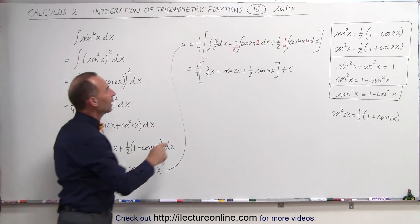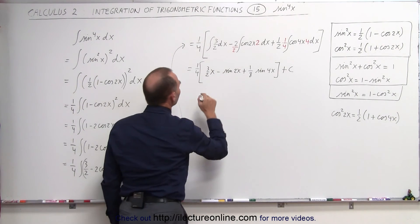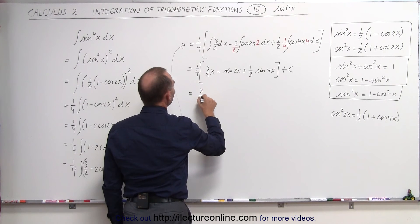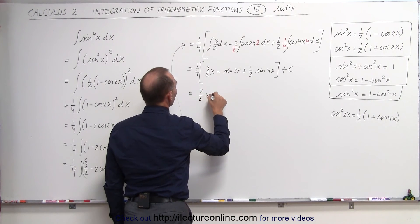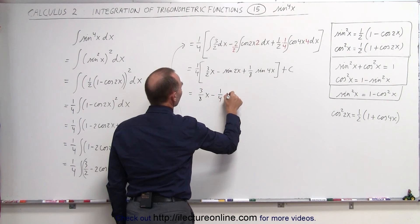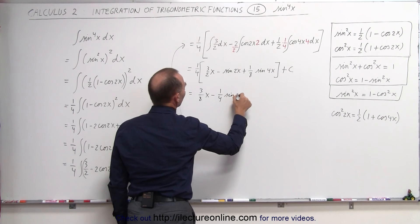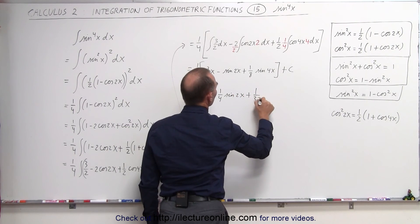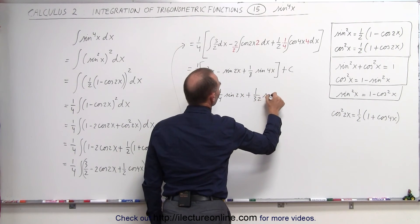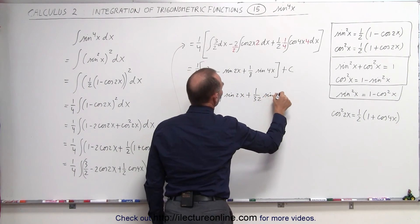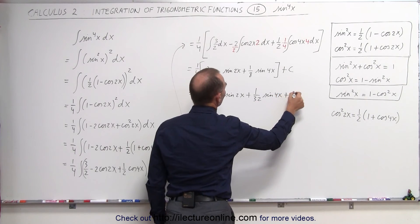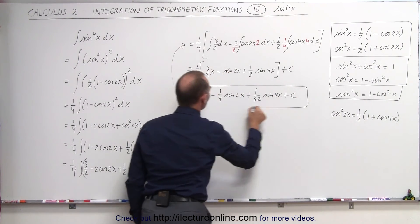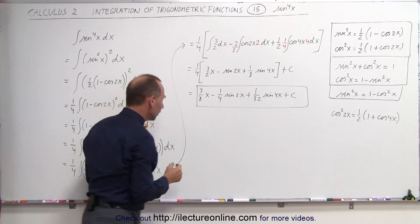Now multiplying the one quarter through, this becomes three over 8 times x, minus one quarter sine of 2x, plus one over 32 times the sine of 4x, plus a constant of integration — which is the solution to that integral.